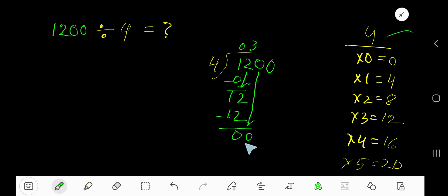Now we have 0. 4 goes into 0 how many times? 0 times. 0 times 4 is 0, subtract 0, bring down the next 0. 4 goes into 0 how many times? 0 times.